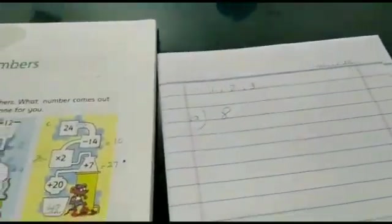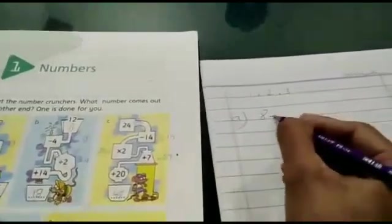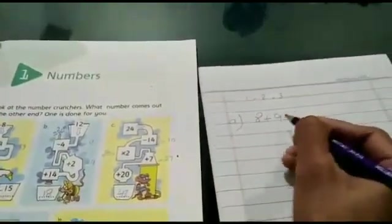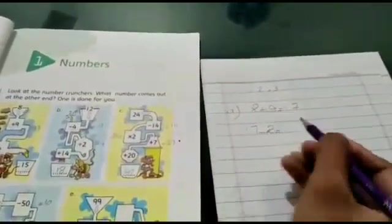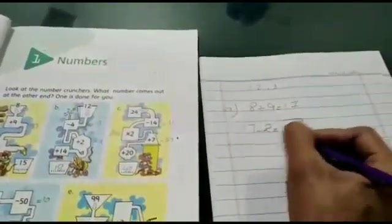1 part A. This is 8. Basically which sign is this? This is plus, so we will add 9 to 8. What answer will we get? The answer is 17. Then we will minus it. We will minus 2 from 17, so what will we get? The answer is 15.